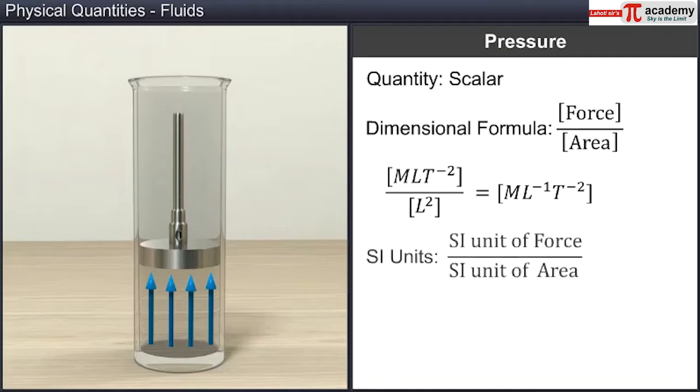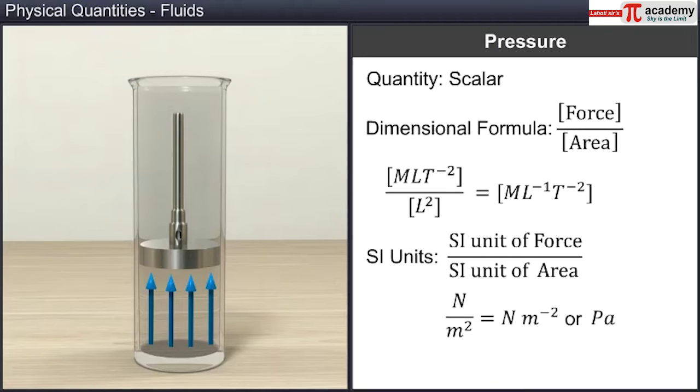Similarly, the SI unit of pressure is the ratio of SI units of force to that of area, which is Newton per meter square, which is also referred to as Pascal or Pa.